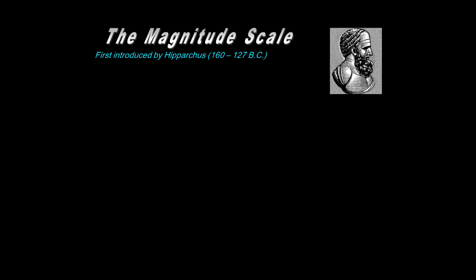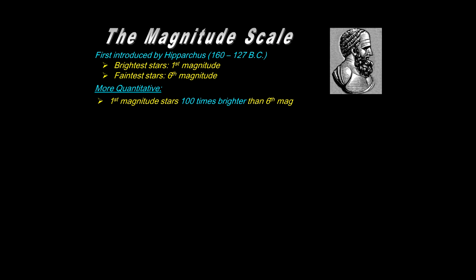Something still in common use is what's known as the magnitude of stars, or the magnitude scale, introduced by Hipparchus, the ancient Greek, where he defined the brightest stars to be first magnitude and the faintest stars visible with the unaided eye as being sixth magnitude. Currently, we have a more quantitative way to consider this: first magnitude stars are 100 times brighter than sixth magnitude stars. So first magnitude is approximately the brightest stars in the sky; sixth magnitude, the dimmest stars we can see.